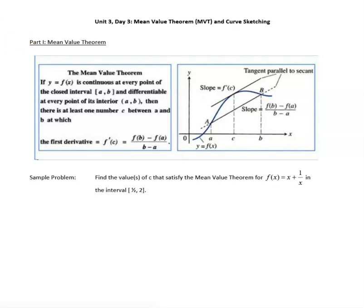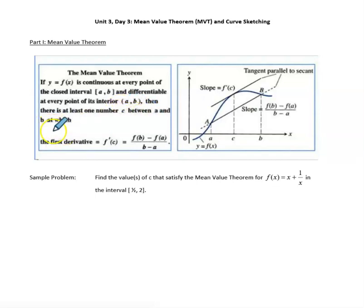The mean value theorem says the following: if you have f, which is a continuous function on every point of a closed interval, and differentiable at every point on the open interval, then there is at least one number c — an x value — between the endpoints a and b, for which the derivative at c equals the average rate of change of the function on the entire interval a to b.